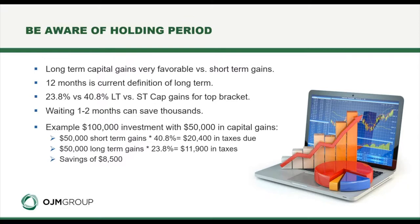You don't want taxes to solely influence your investment decisions, but if you're a short period of time from reaching that 12-month threshold, it can certainly make sense to delay your trade. For example, a $100,000 investment with $50,000 in short-term capital gains — assuming the highest rate — results in $20,400 in taxes. By waiting a short period of time, $50,000 in long-term capital gains results in only $11,900 in taxes — a savings of $8,500.